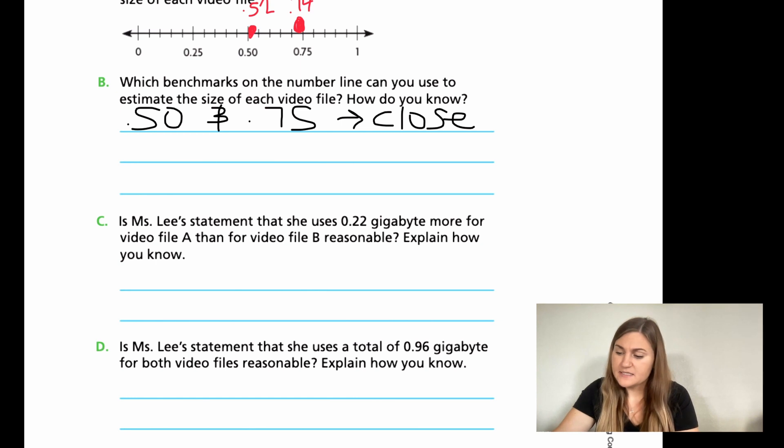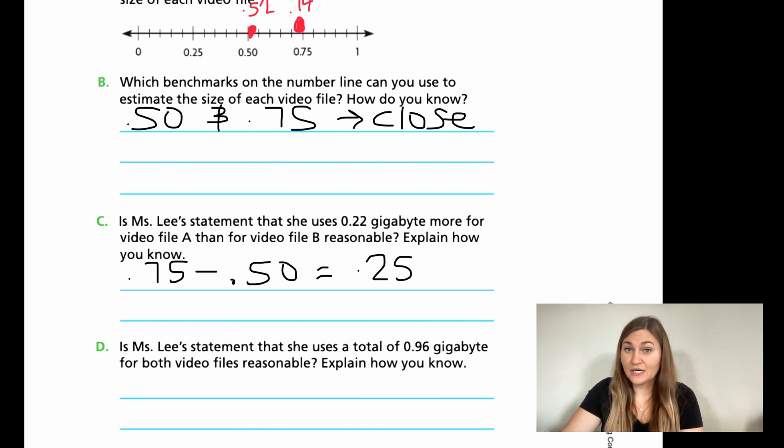All right, for C, it says, is Ms. Lee's statement that she uses 0.22 gigabytes more for video file A than for video file B? Well, in A, if we're using those benchmarks, we would have 0.75 minus the 0.50. Now 75 minus 50 is 25. So using my benchmarks, if I figured out that was 0.25, is the actual answer that she gives of 0.22 reasonable? Yes, again, because 0.22 is really close. So we would want to say yes.